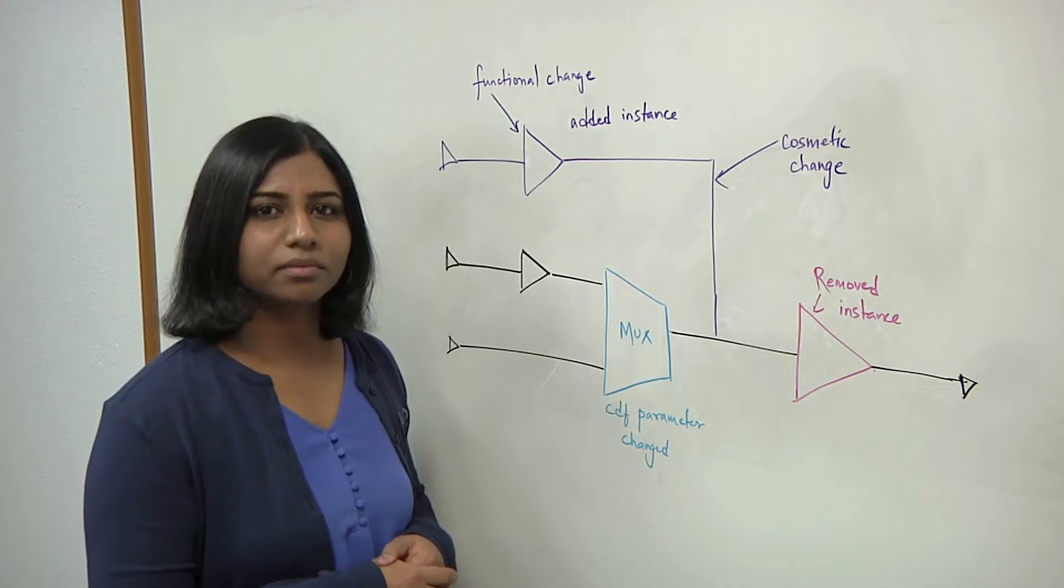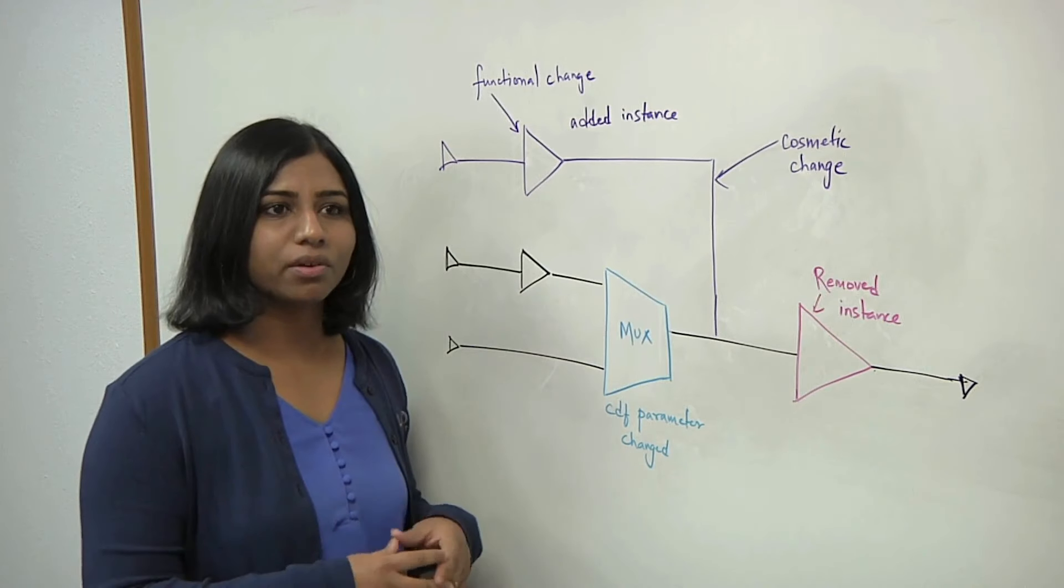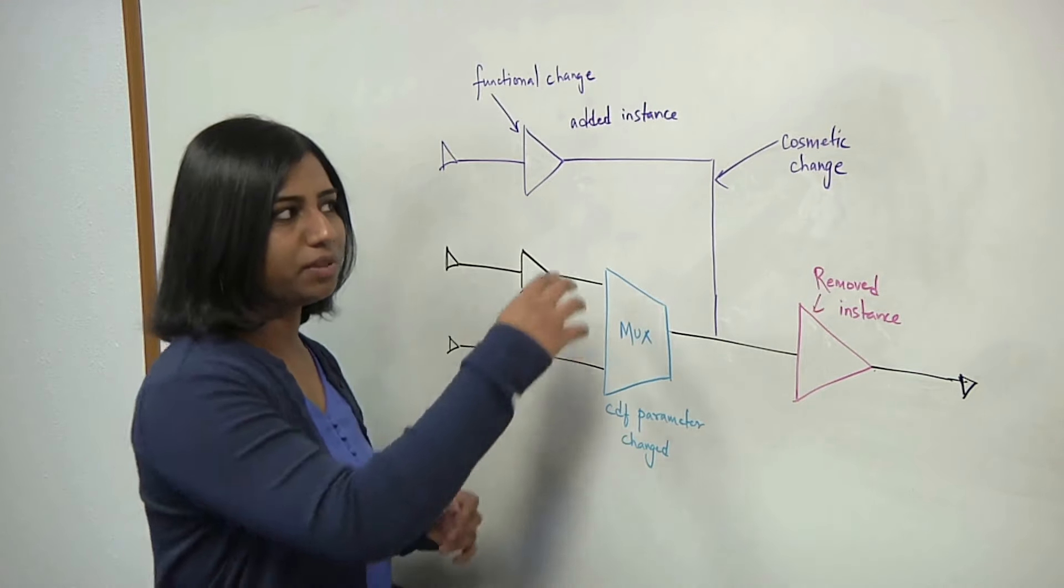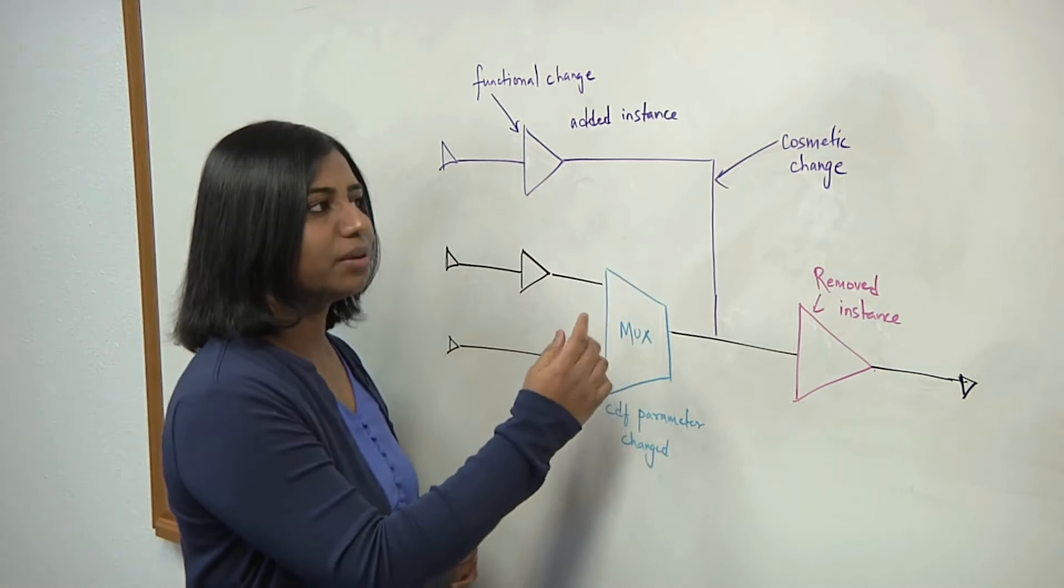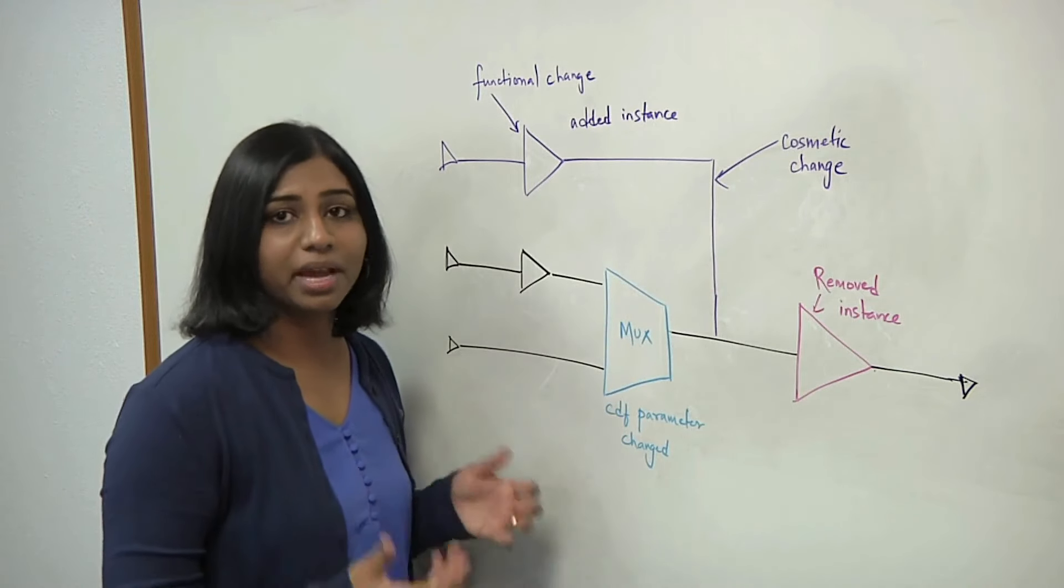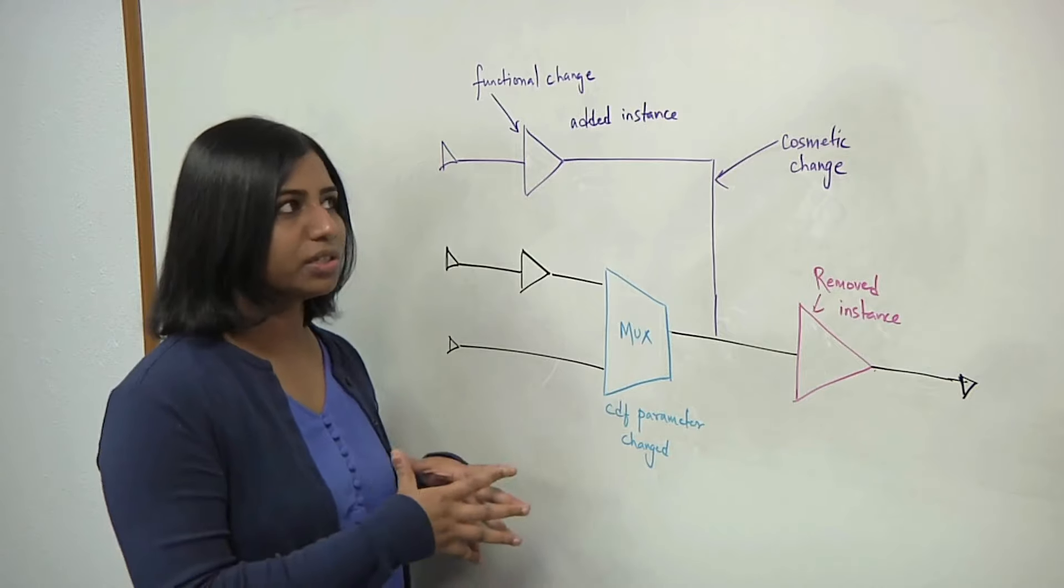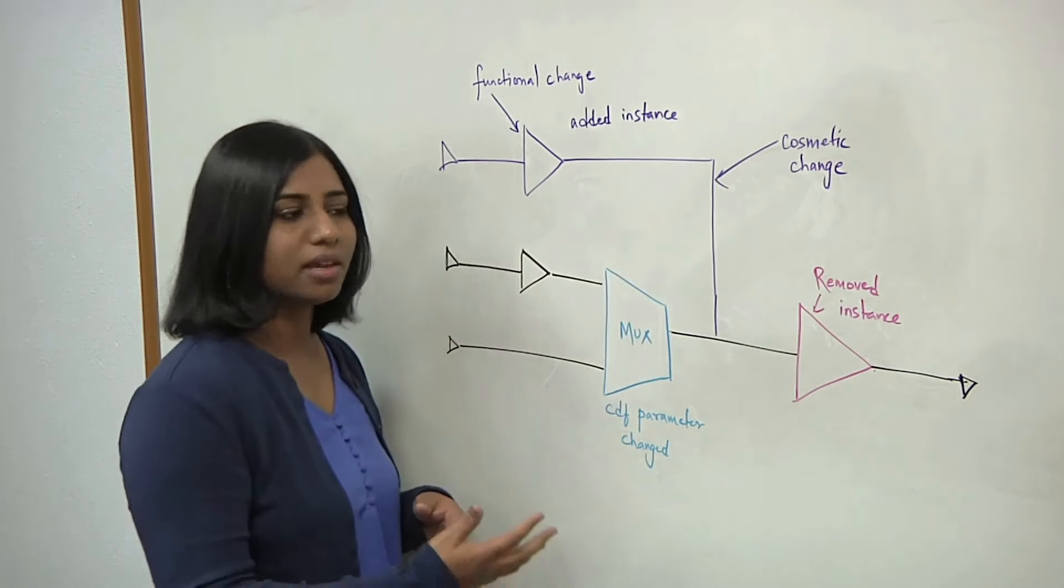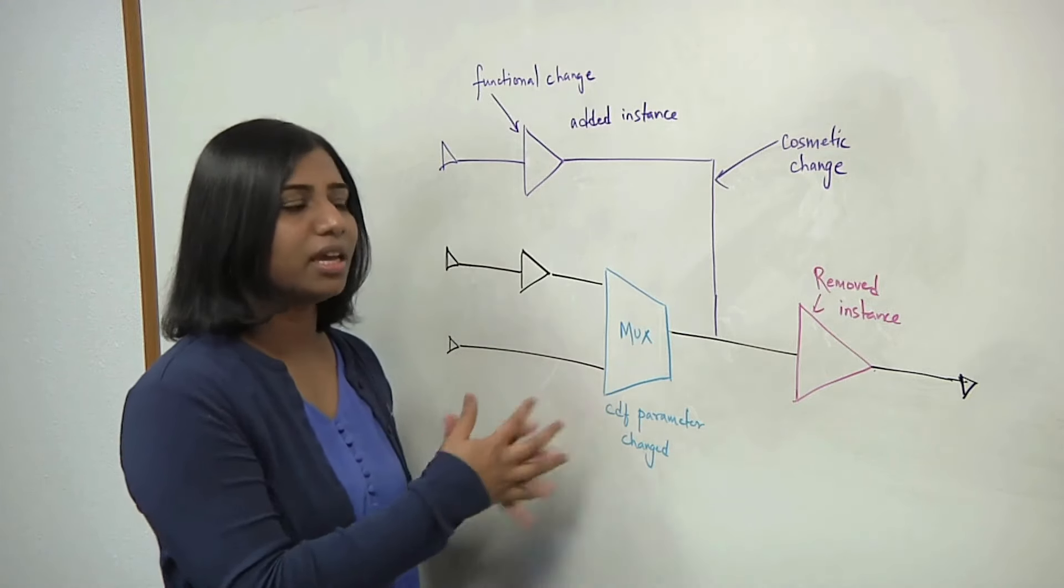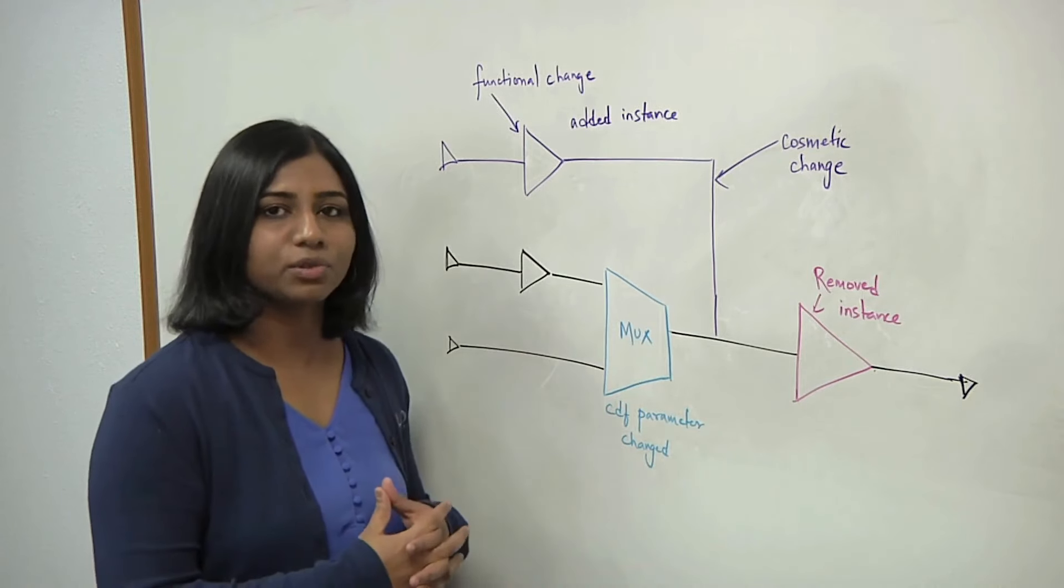So what kind of changes are you really trying to keep track of? When you're talking about schematics, you have objects like wires or interconnects which are more superficial, cosmetic. If the wire changed a little bit, if it became a little bit longer or shorter, in a schematic it doesn't really matter. So that's considered as a cosmetic change. Whereas functional changes involve adding or removing of an instance or a CDF parameter of, for example, a MUX changing. So those kind of objects and changes are what needs to be kept track of in a schematic.